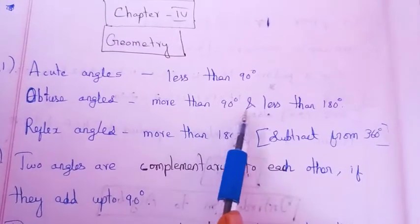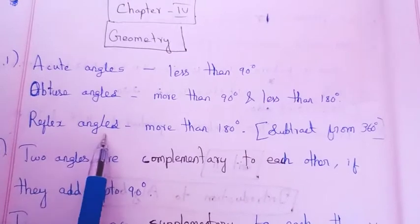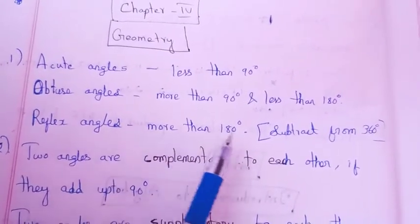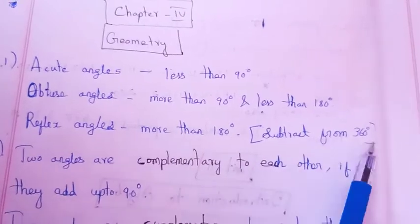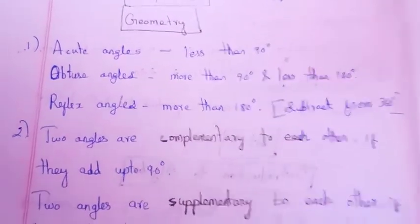Obtuse angles are more than 90 degrees and less than 180 degrees. Reflex angle is more than 180 degrees. If you have more than 180 degrees, you can subtract the value.